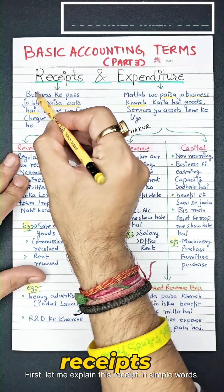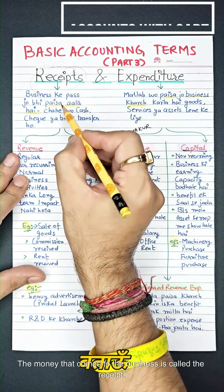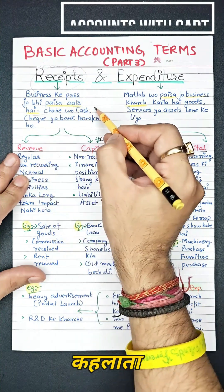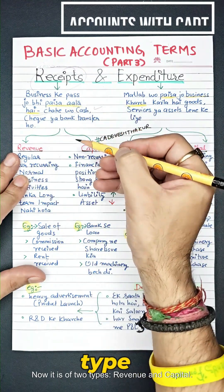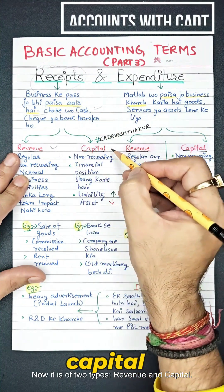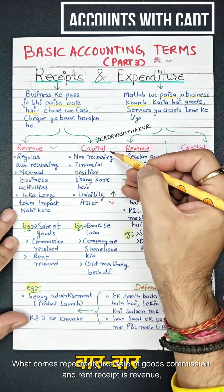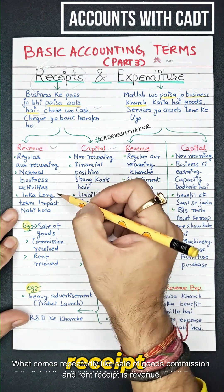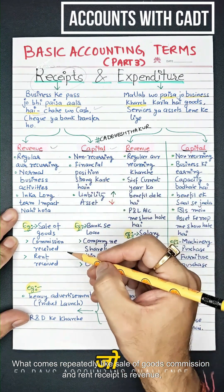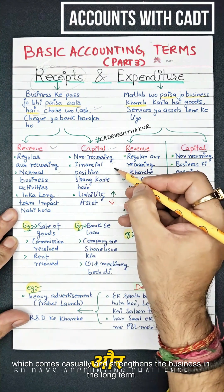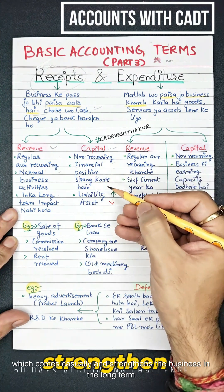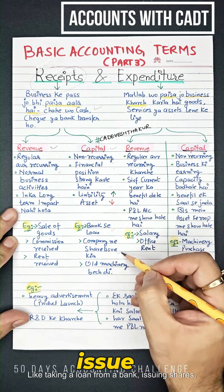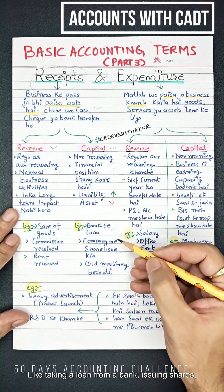First, let me explain receipts in simple words. The money that comes into the business is called a receipt. It is of two types: revenue and capital. What comes in repeatedly — like sale of goods, commission, and rent received — is revenue. What comes occasionally and strengthens the business long-term — like taking a loan from a bank, issuing shares, or raising money — is capital.